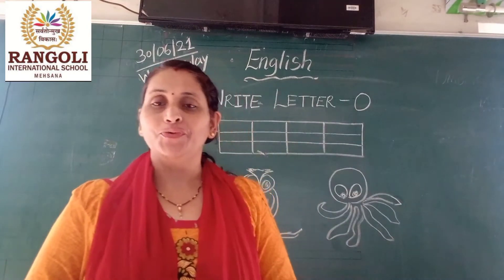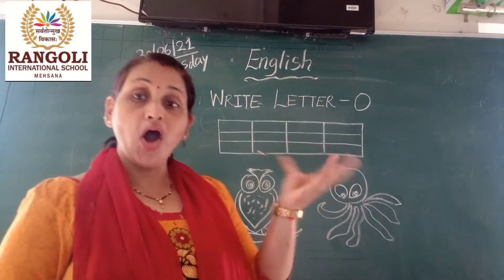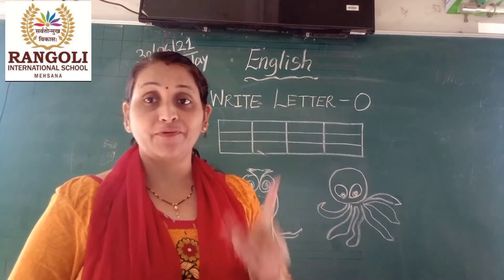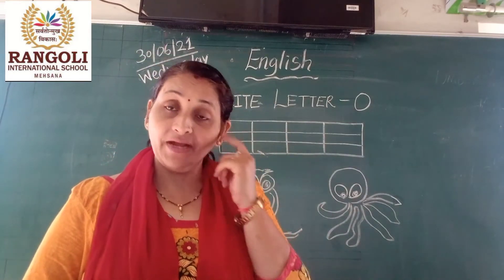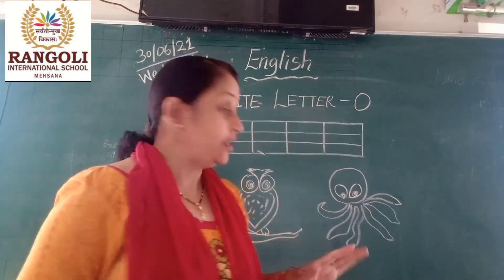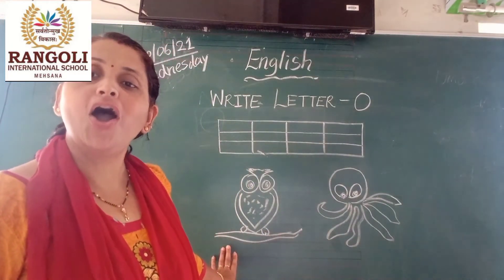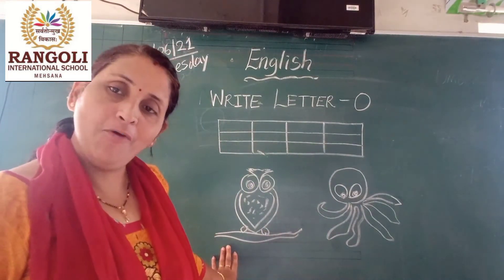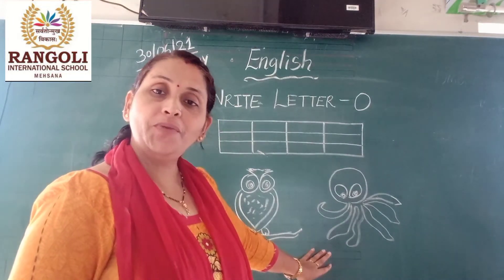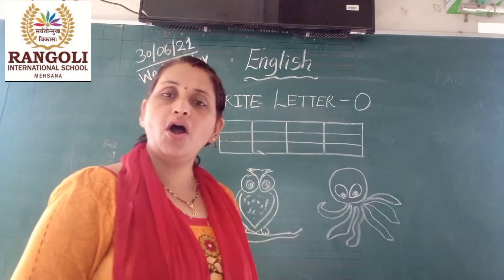Capital O. O is for orange — O, O, orange. What is the sound of letter O? O. O is for owl — O, O, owl. O is for octopus — O, O, octopus.